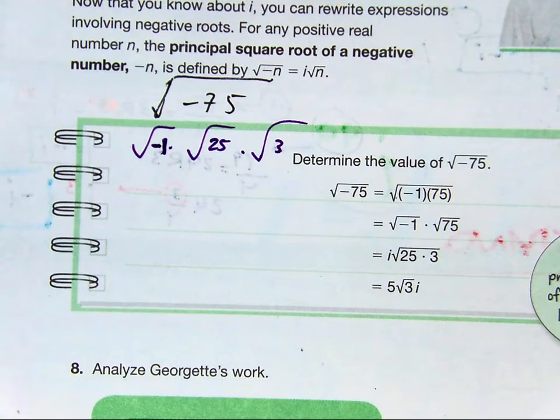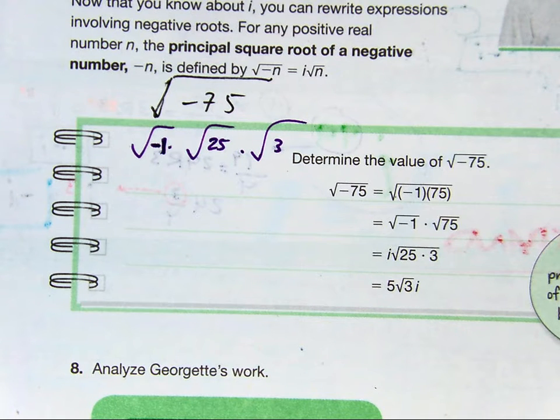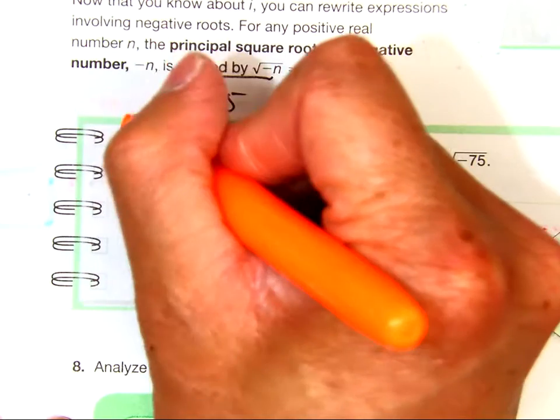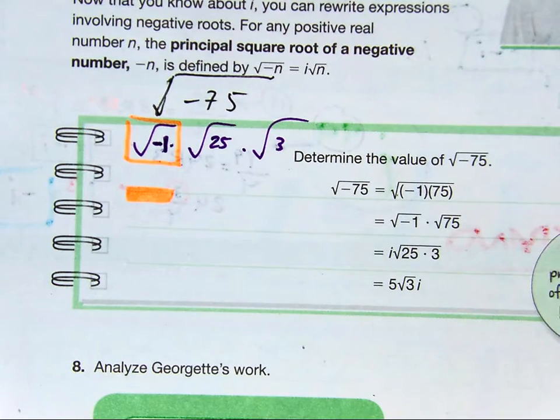Here's the lesson from yesterday. Partner A, tell partner B, what's the square root of negative 1? Aristille, what is the square root of negative 1? It is i.